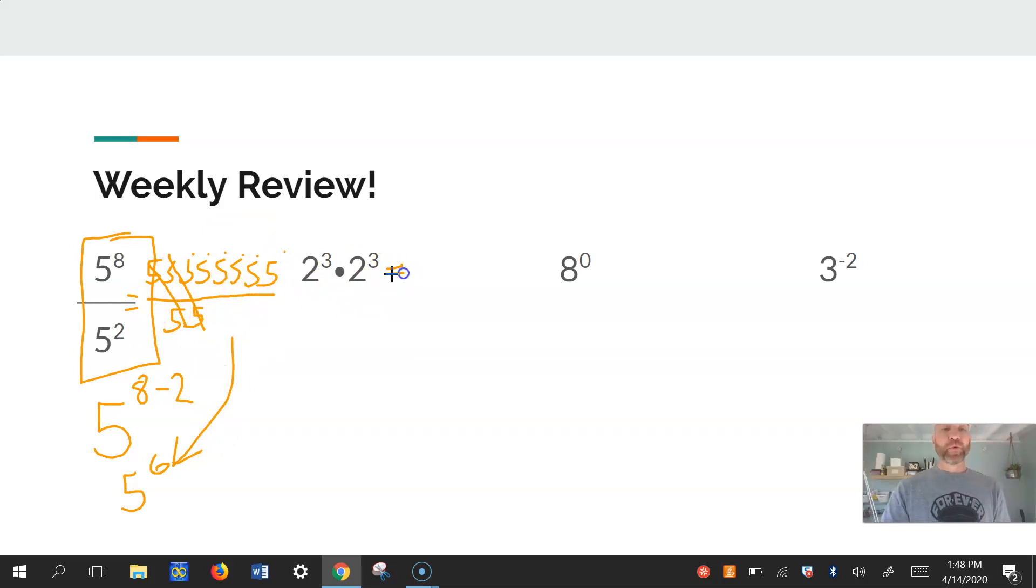All right. This one, again, when we're multiplying, we have to check. Do they have the same base? Yes, they do. It's multiplication. So what do I do with the exponents? Keep the base and add the exponents. 2 times, sorry, 2 to the 3 plus 3 power is 2 to the 6th power. So that's that one. A couple things to the 6th power so far. All right. 8 to the 0. You remember anything to the 0 power is 1. All right. Anything to the 0 power is 1.